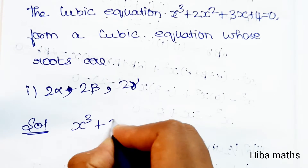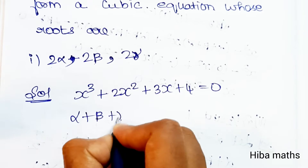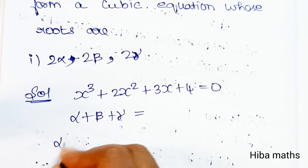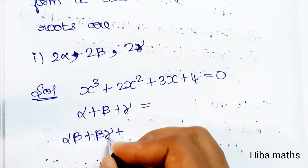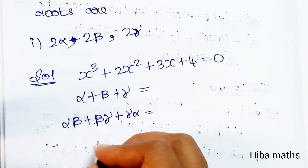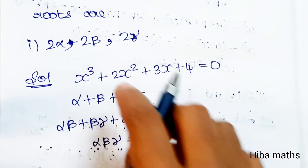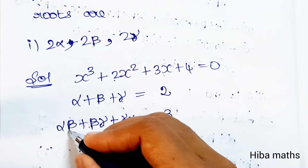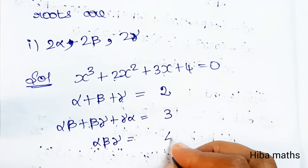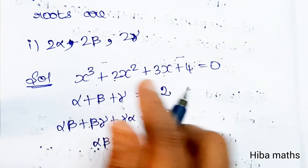Solution: from x³ + 2x² + 3x + 4 = 0, we identify the sum α + β + γ, the sum of products αβ + βγ + γα, and the product αβγ. We need to find these three values from the equation.